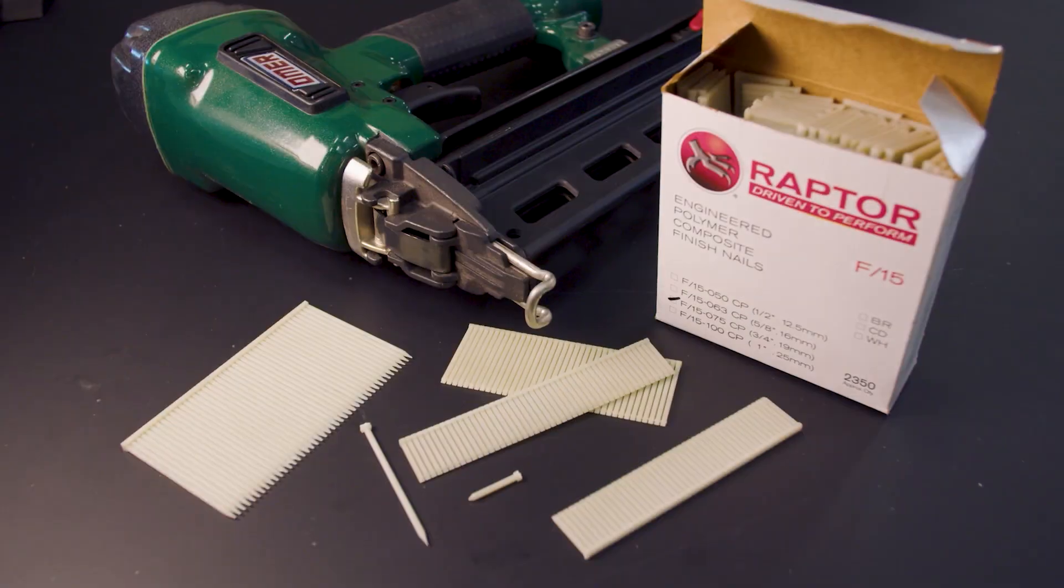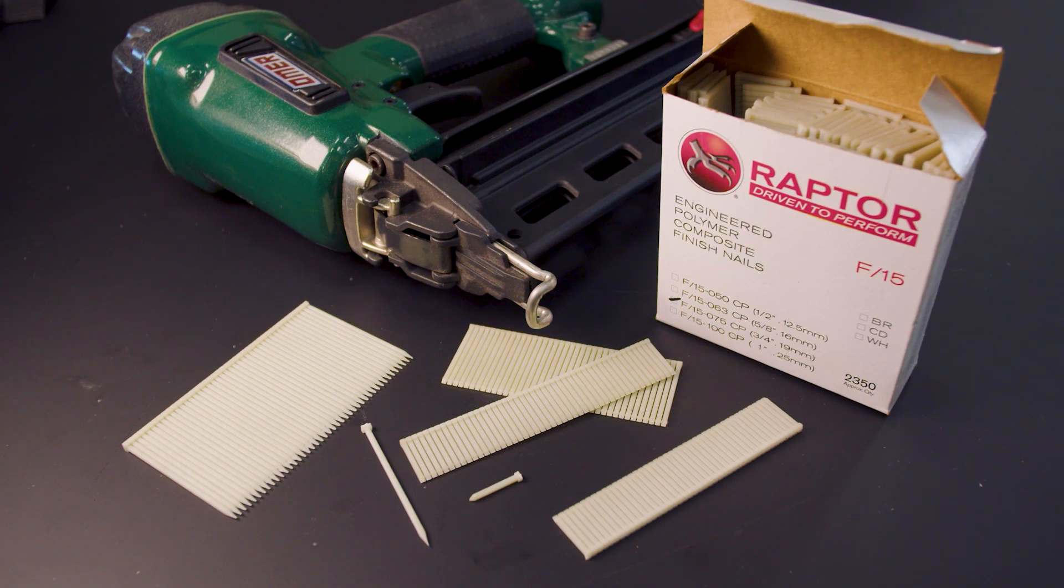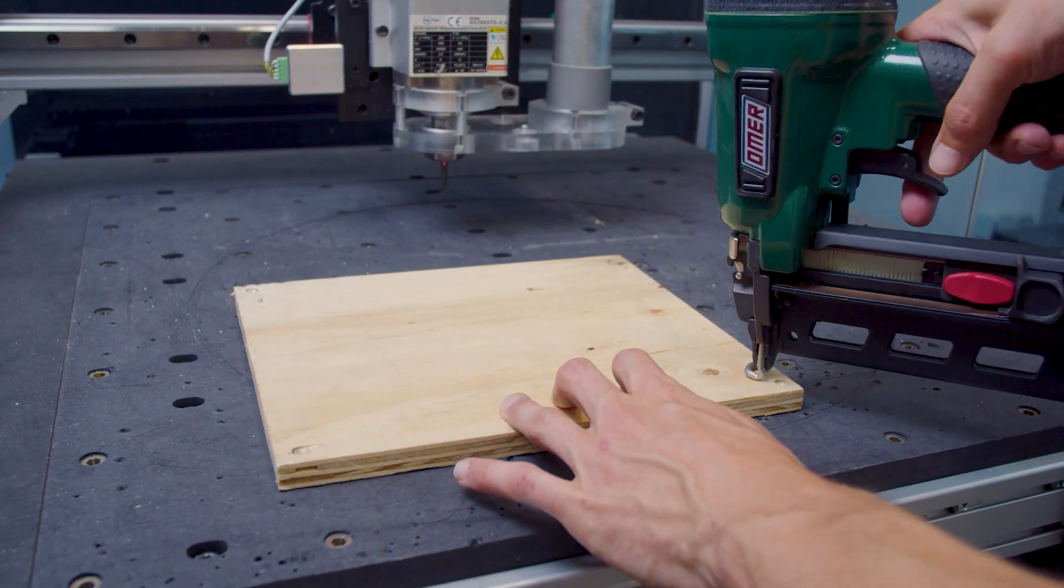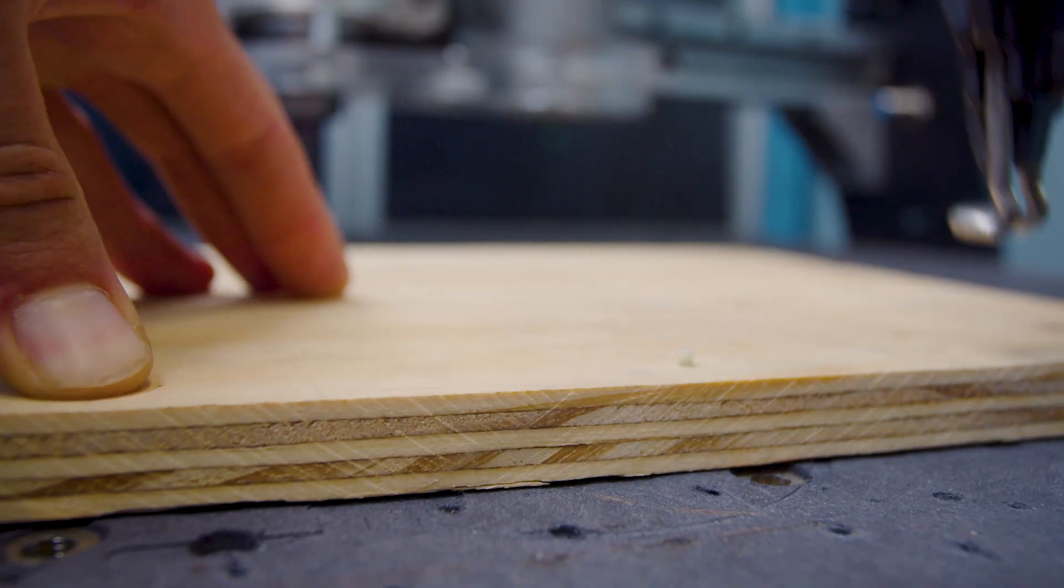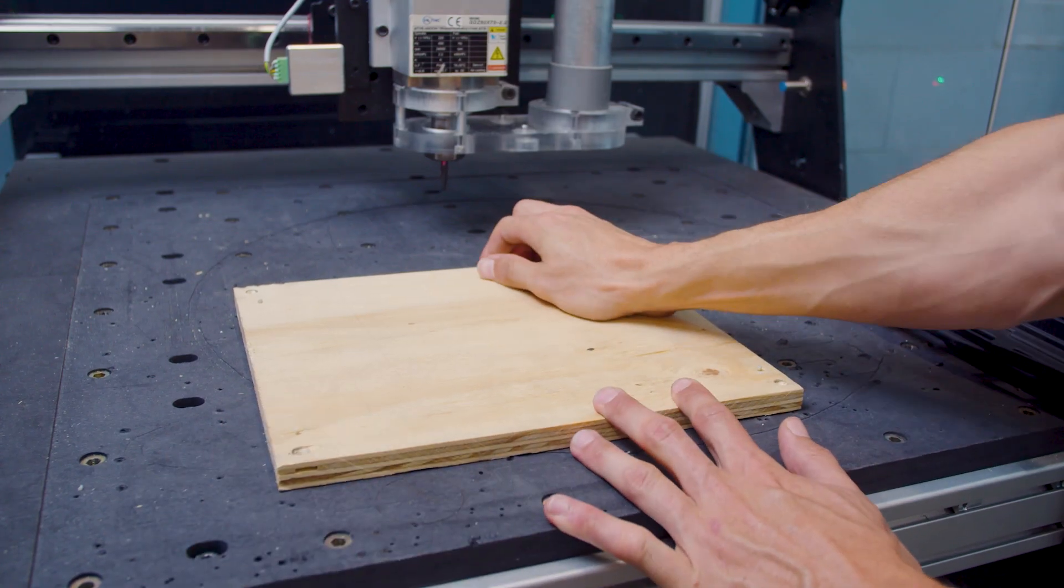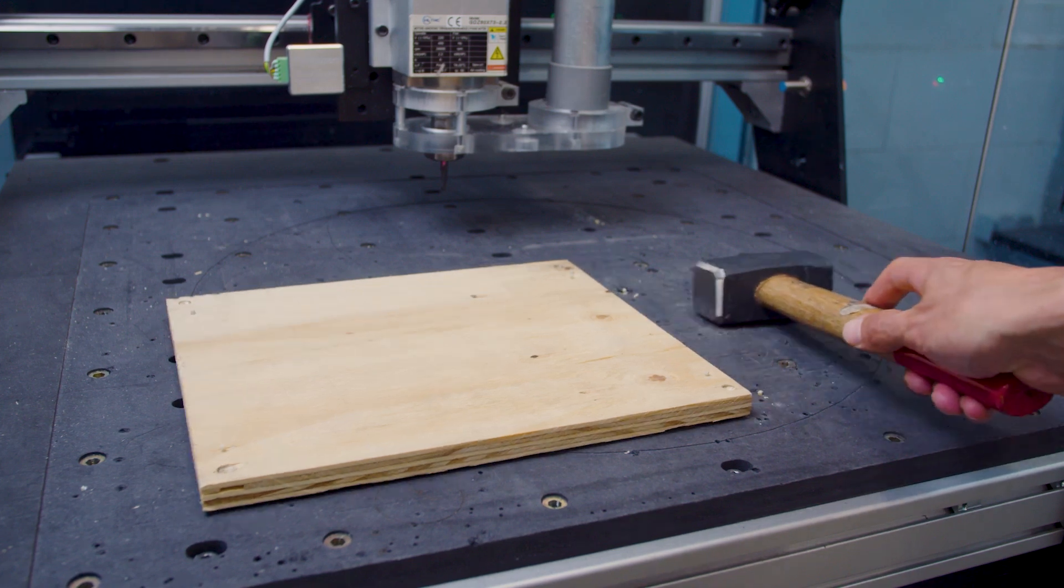Number two: the composite nails. If you're working with wood, a composite nail gun might be a good solution for you. It uses non-metallic nails to fix the panel to the spoilboard. When your work is finished, you can break the nails by hitting the panel sideways with a hammer.